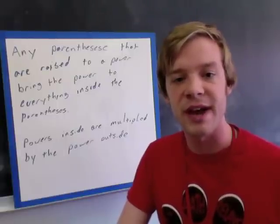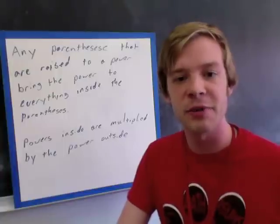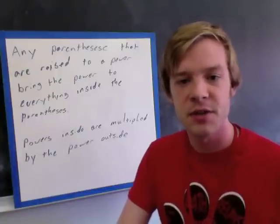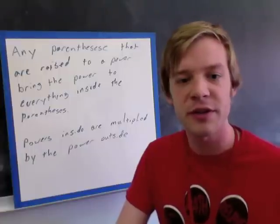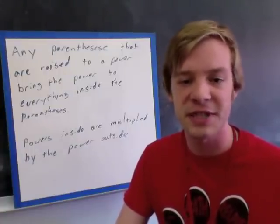The second rule we have is that when we do this, the powers inside are multiplied by the powers outside. So for instance, if you had a power of 3 on the inside and a power of 5 on the outside, you'd multiply those together to get a power of 15.